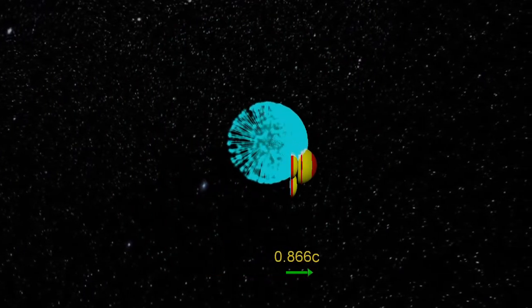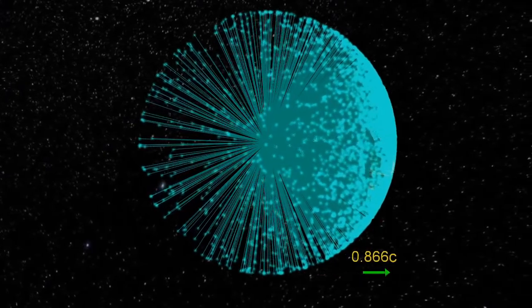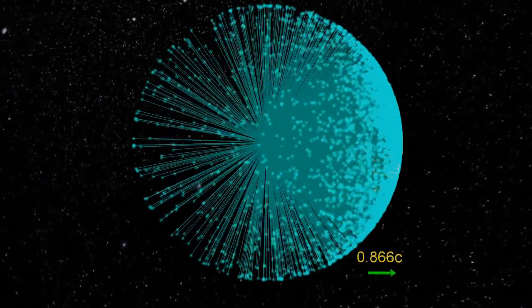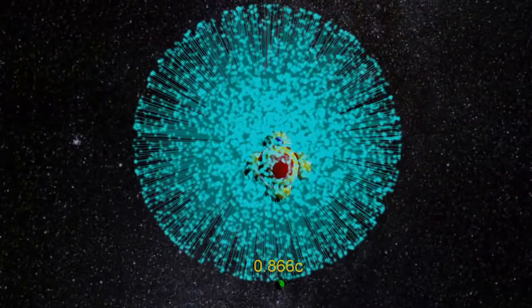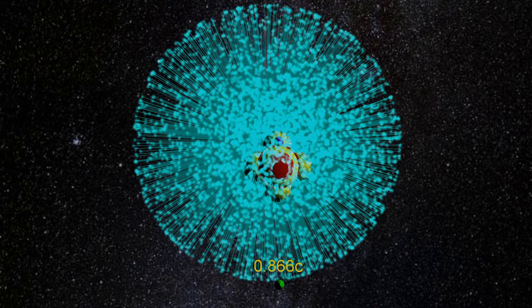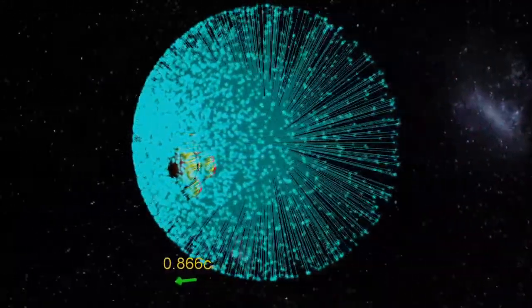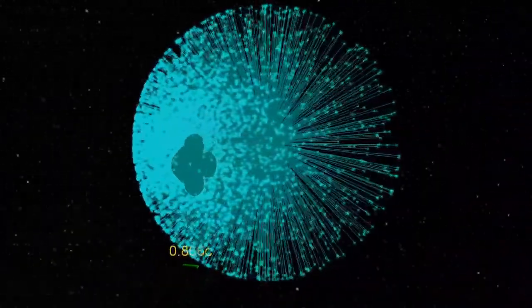At 0.866c, the beaming effect is very strong. If you were standing in the front of the spacecraft, you would see the light bulb brighter than when it was stationary. If you were standing at the back of the spacecraft, you would be receiving fewer photons and the light bulb would look dimmer.